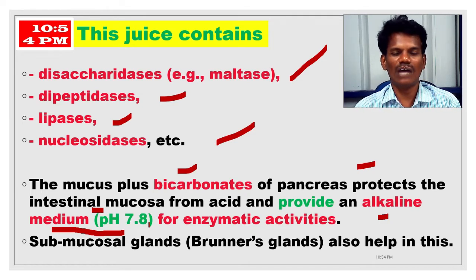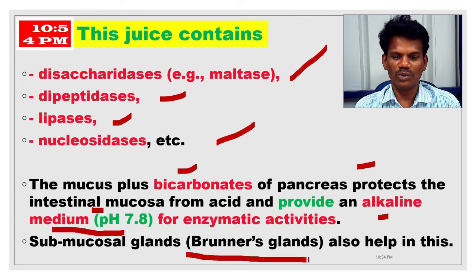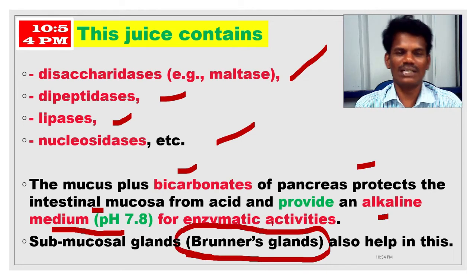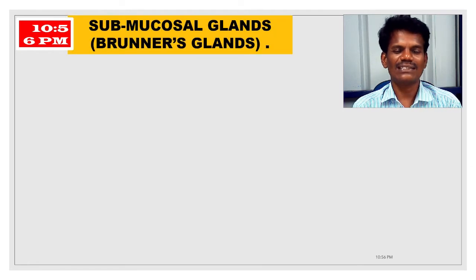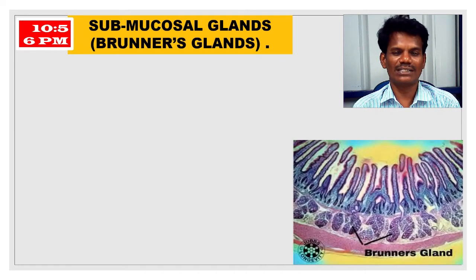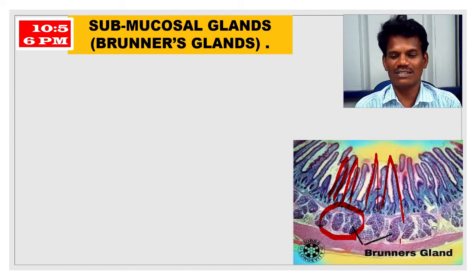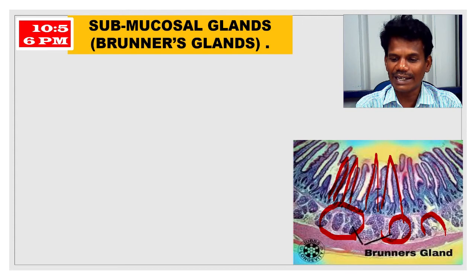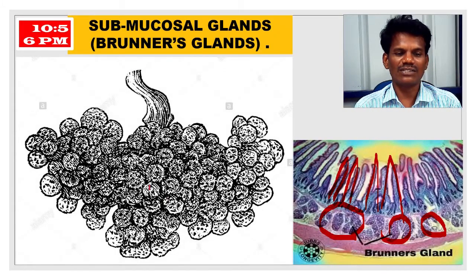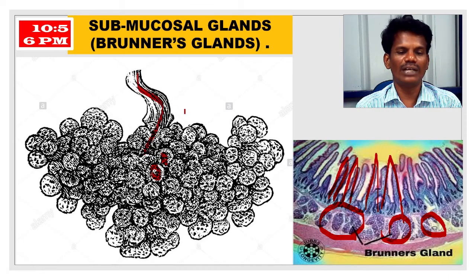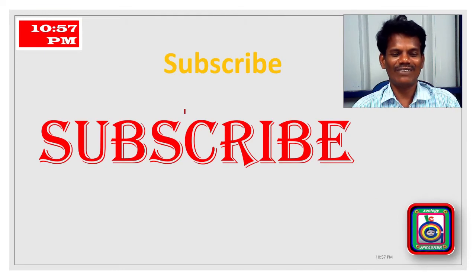Submucosal glands, called Brunner's glands, also help in secreting mucus and enzymes of the intestine. Looking at the intestinal wall, you can see many small villi projecting into the lumen. At the base of the villi are grape-like cluster structures called Brunner's glands. These glands consist of small cells gathered together with a duct, through which secretions are poured into the lumen of the intestine. That concludes this topic, and the remaining content will be covered in the next class.